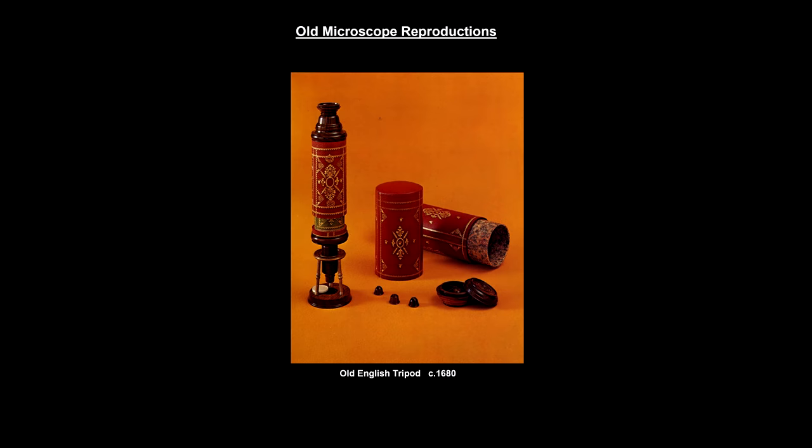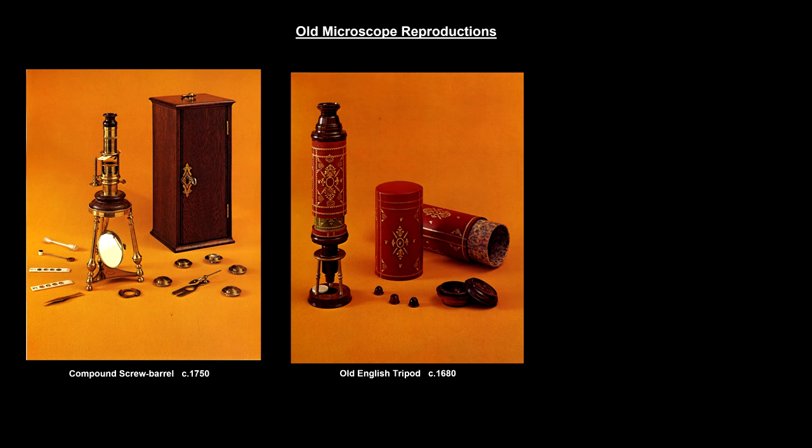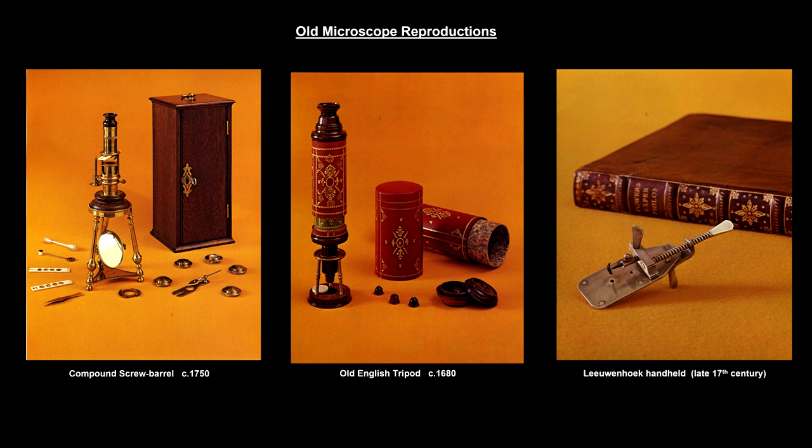Evidence points to the first microscope appearing in the Netherlands in the late 1500s. We know that Galileo used them in the early 17th century. The discovery of things like blood cells and microorganisms in the late 1600s really accelerated interest and development.